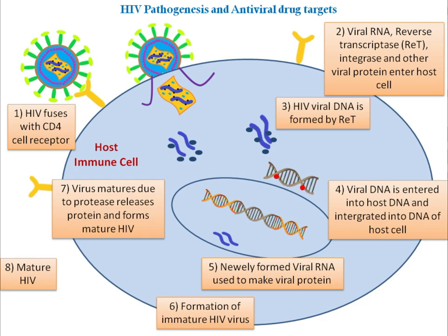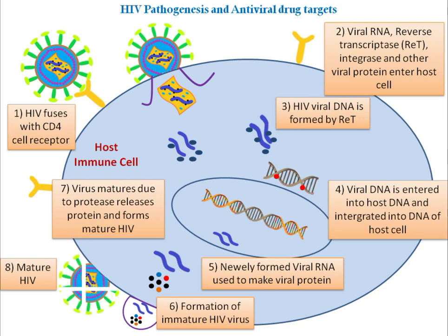Then this newly formed viral RNA is used to make viral proteins outside of the nucleus. As a result, there is formation of the immature HIV virus. This immature virus matures due to the protease, which releases the protein and forms the mature HIV virus.